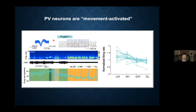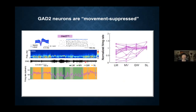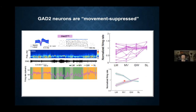We recorded from the PV-positive neurons using optrode recording with channelrhodopsin tagging. Most PV neurons are most active during locomotion, less active during non-locomotor movement, and least active during sleep. But if we record from the GAT2 cells in the medial SNR, most of them are most active during sleep and actually less active during movement. The population average shows the magenta GAT2 and cyan PV populations display opposite trends, even though individually there's quite a bit of variability.